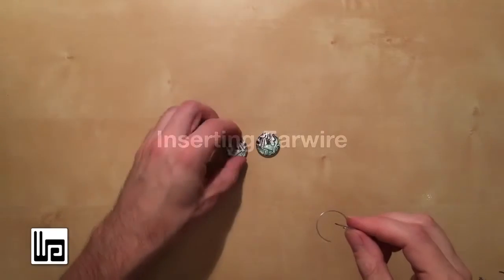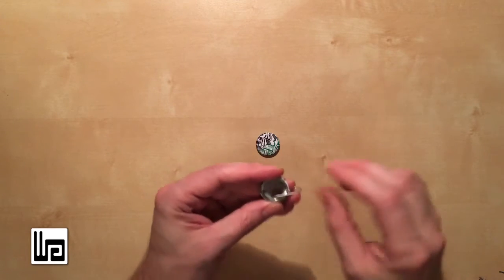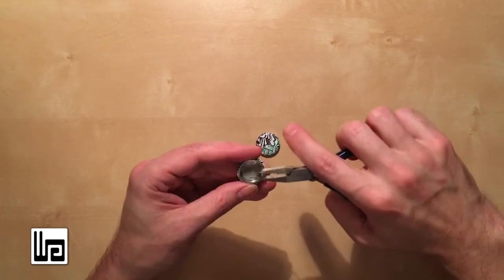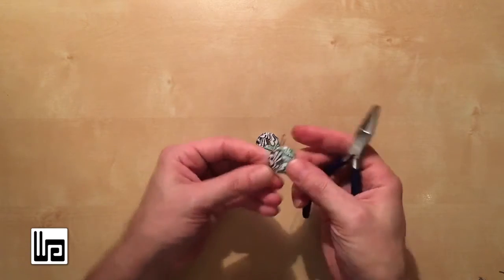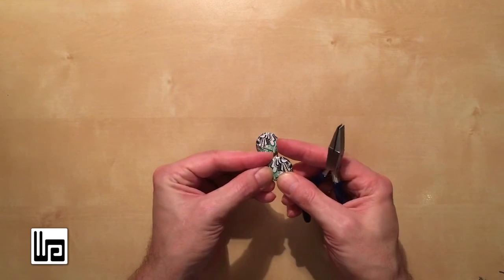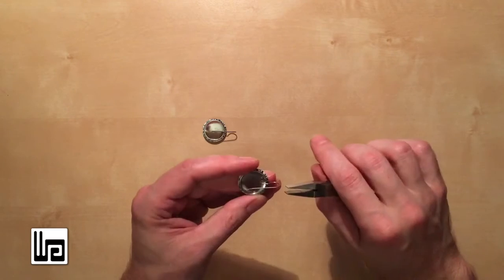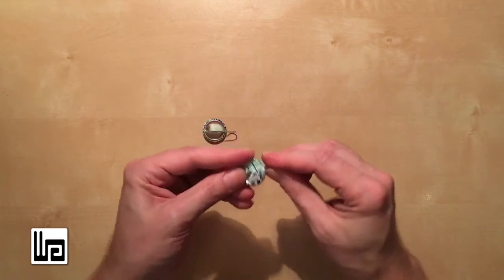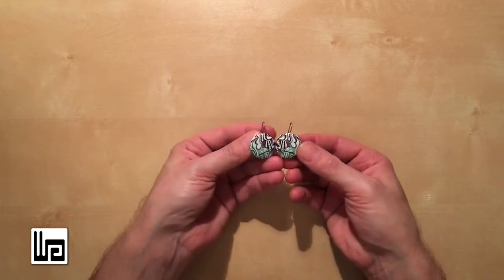Ear wires are very similar to the perpendicular loop. Just pop it in there. If it's straightened, you need to straighten it out a little bit. And then line it up where you want it. Looks pretty good. And you've got a pair of earrings.